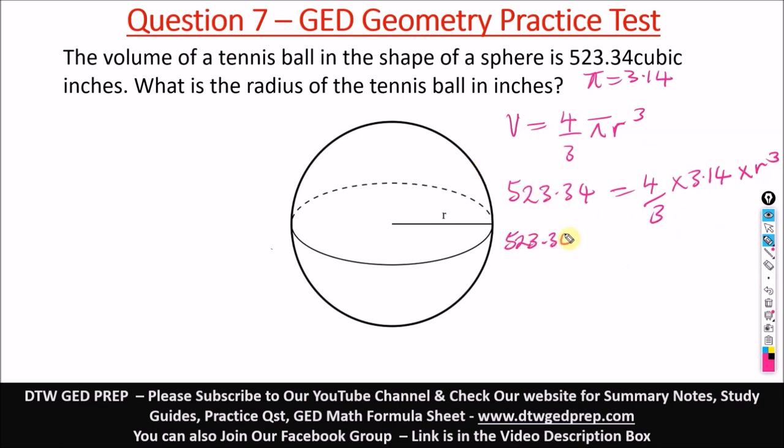So we have 523.34 times 3 equal to 4 times 3.14 times r cubed.